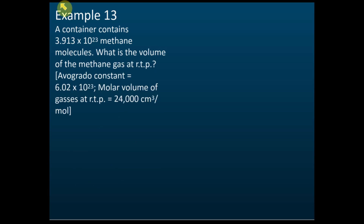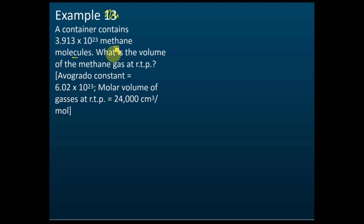Example 4: A container contains 3.913 × 10²³ methane molecules. Methane is a gas. What is the volume of the methane gas at room temperature and pressure? They give you the Avogadro constant and the molar volume of gas at room temperature and pressure.